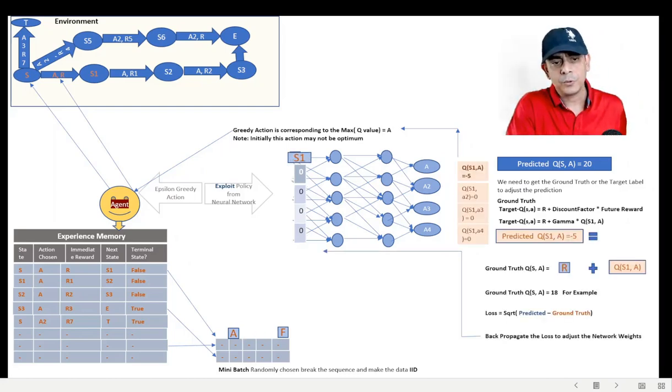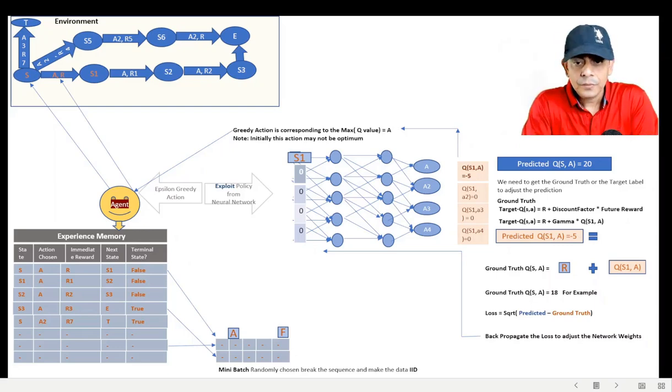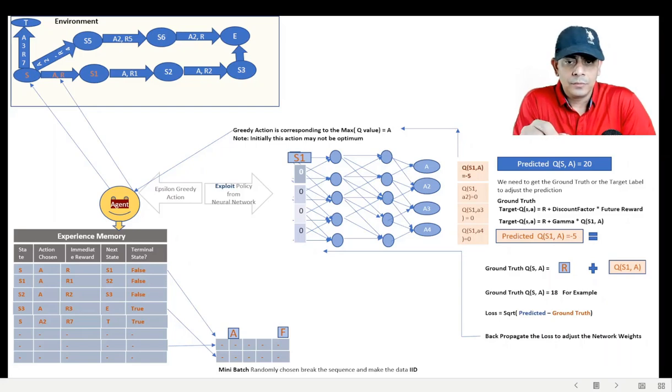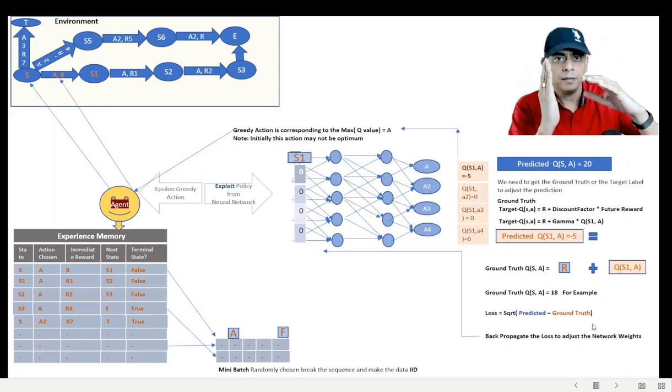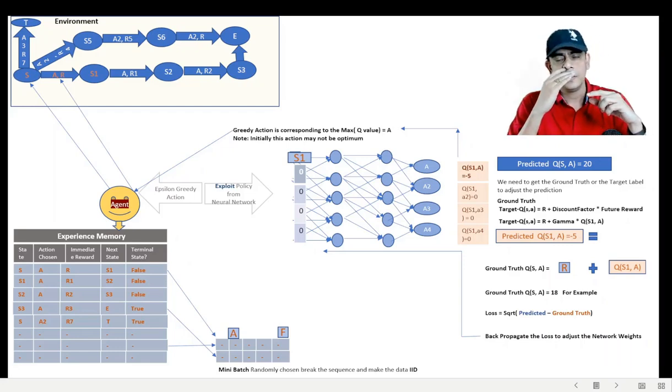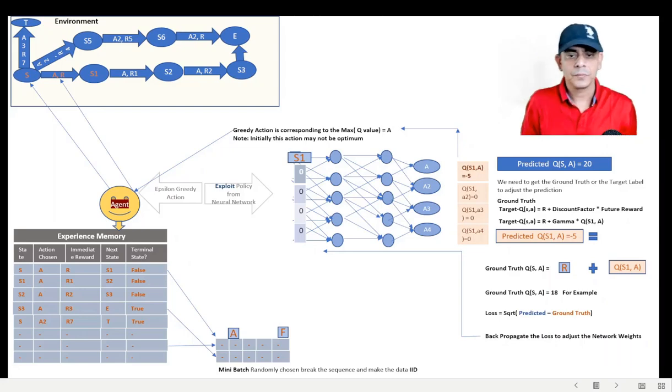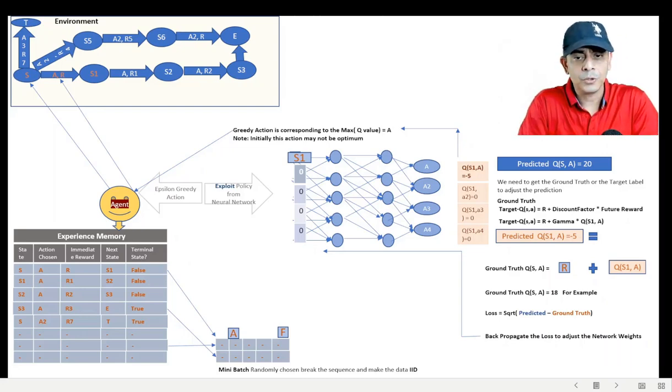There's one more thing which I want to emphasize here: in this training process, for every step we are taking, we are changing the weight. And when we reach to the next step, the target has also changed. You know, the very purpose of giving S1 as the input and trying to get Q(S1,A) is to calculate the target. And the target should remain fixed until all my batch training is over, because otherwise we are constantly changing the goal post.